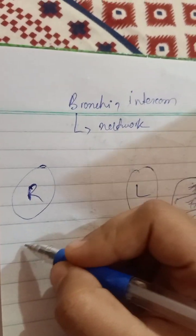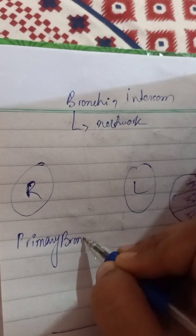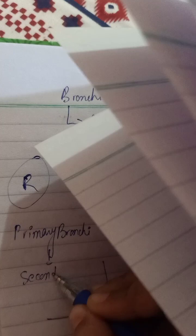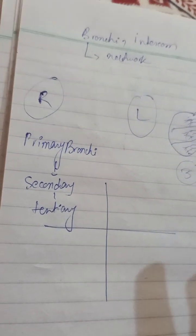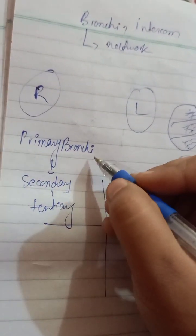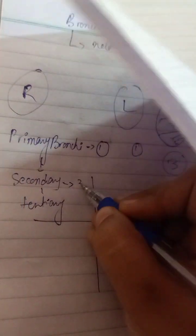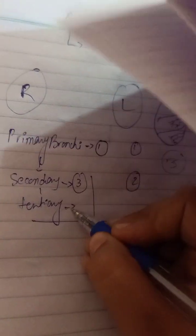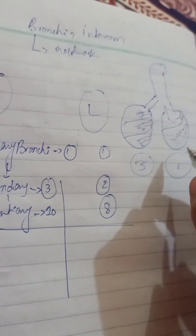In the right lung we have one primary bronchi, then secondary bronchi, then tertiary bronchi. Primary bronchi: one on each side. Secondary bronchi: three on the right, two on the left. Tertiary bronchi: ten on the right, eight on the left — just because of the difference in size of the lungs.